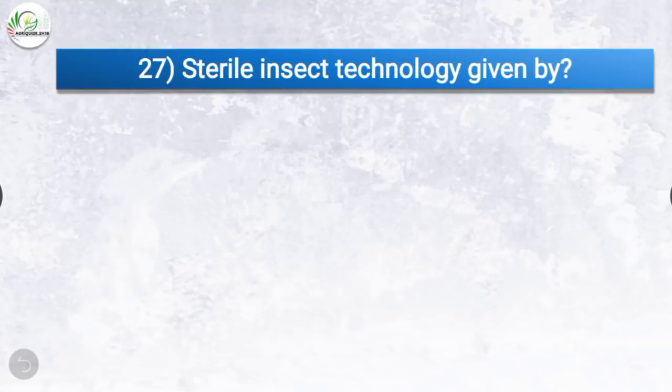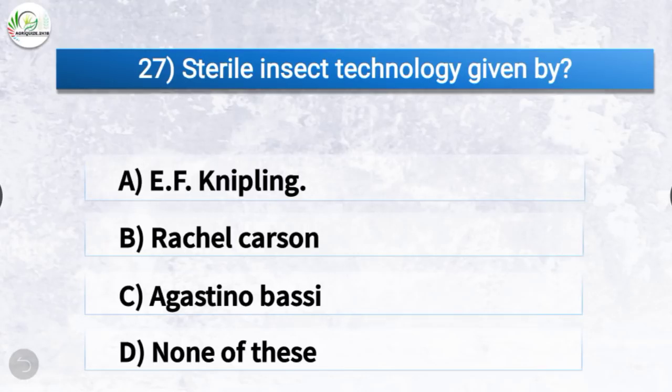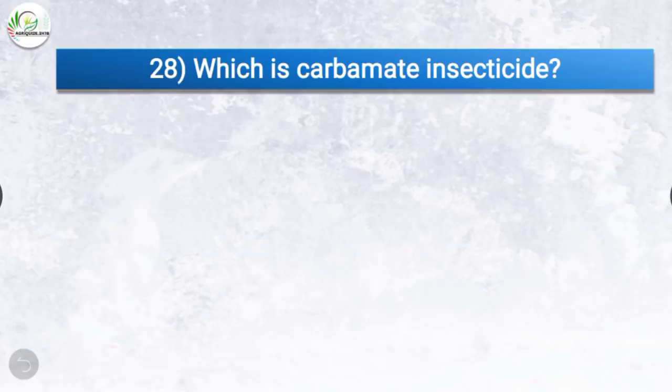Question number 27: Sterile insect technology was given by? The correct answer is option A, E.F. Knipling. Sterile insect technology was given by E.F. Knipling.